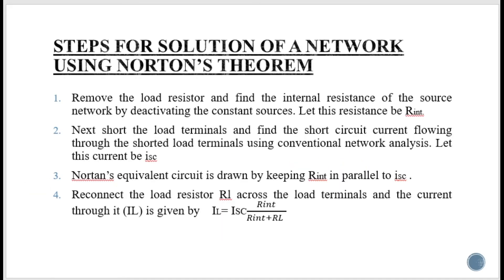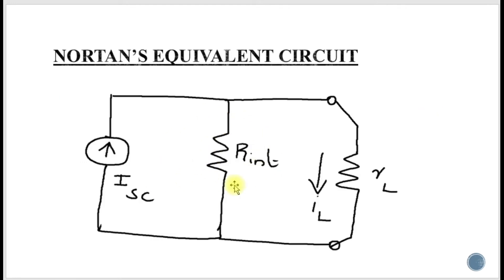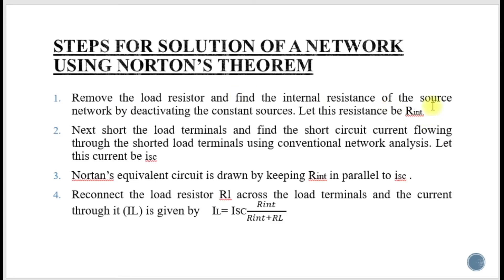The steps for solving a network using Norton's theorem: first, remove the load resistor. Second, find the internal resistance of the source network by deactivating the constant sources — sources can be either voltage or current. Let this resistance be called R internal. Next, short the load terminals and find the short circuit current flowing through the shorted load terminals using conventional network analysis.